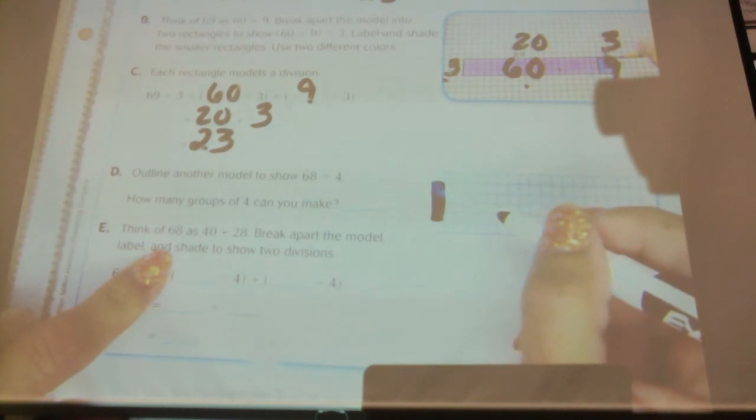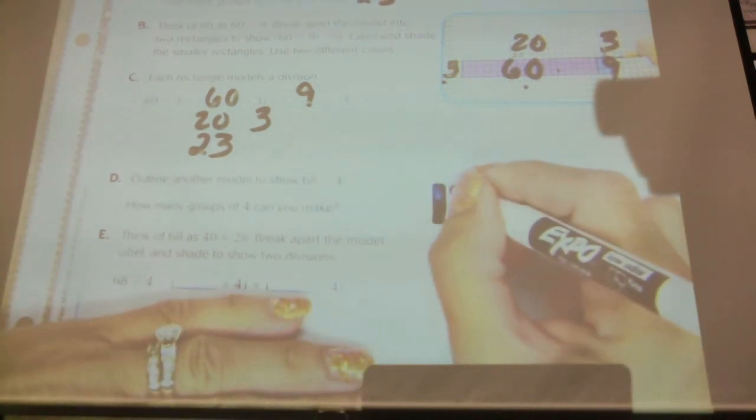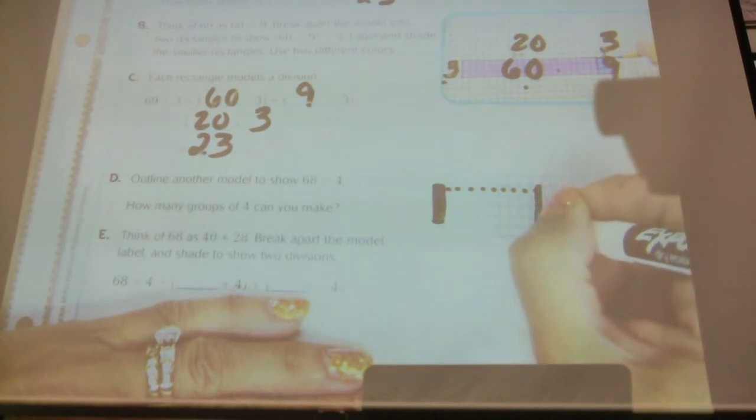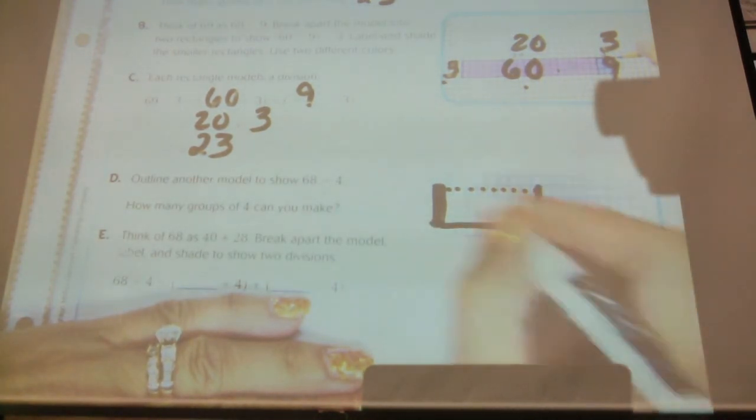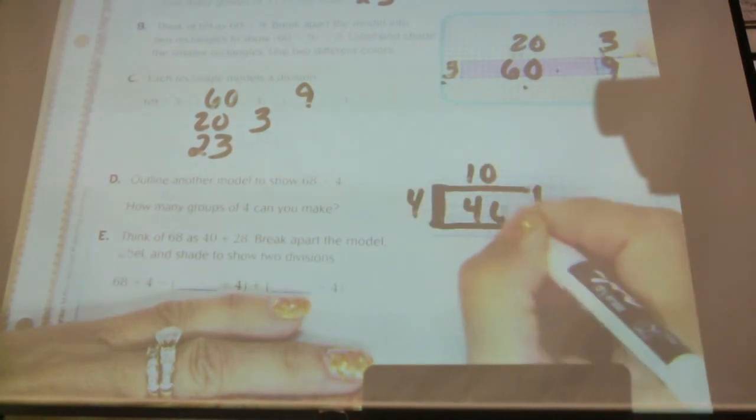3 times 4 is 12? That's really low. Can we go bigger? Owen? 10 times 4 is what? 40. So let's do a 10. 2, 3, 4, 5, 6, 7, 8, 9, 10. Here's a 10.